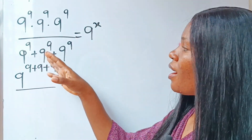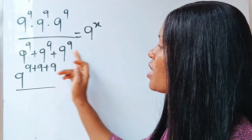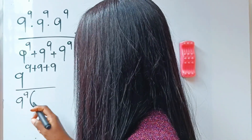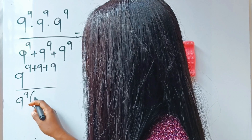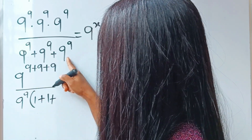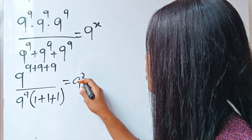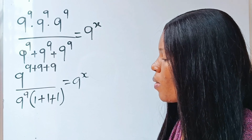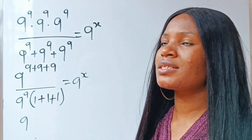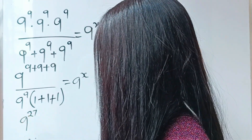Divided by... now you have 9 to the power of 9 plus 9 to the power of 9 plus 9 to the power of 9. What do they have in common? 9 to the power of 9. So we are going to bring that out and factorize. 9 to the power of 9 divided by itself gives 1, this divided by this gives another 1, this divided by this gives another 1. So we have 9 to the power of 9 plus 9 is 18, and 18 plus 9 will give us 27 — so we have 9 to the power of 27.